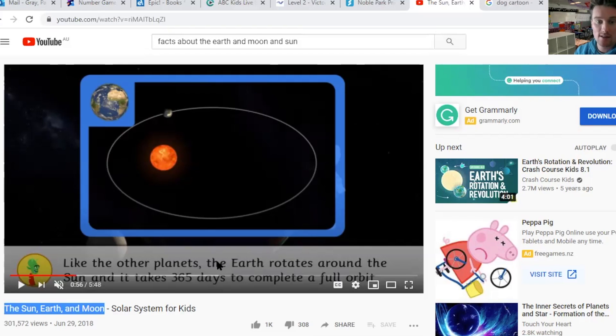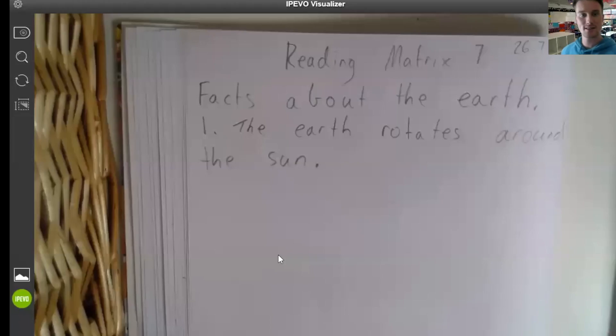So I'm going to write down the earth rotates or goes around the sun. That can be fact number one. So write a number one and write that down. The earth rotates or goes around, rotates around the sun. Let me show you what I've written. So go nice and slowly. And you can write down the same fact as me if you want. That's fine. So here we go.